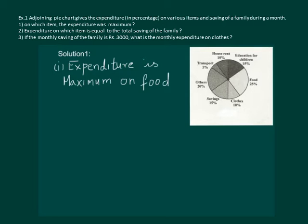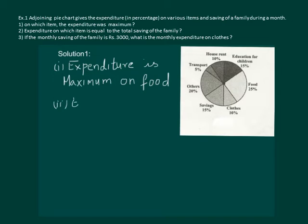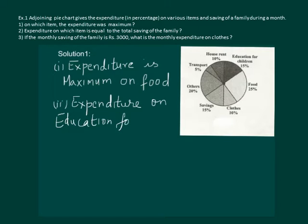The second part of the question is: expenditure on which item is equal to the total savings of the family? From the graph we can see that savings of the family is 15%, and education for children is also 15%. So we can say that expenditure on education for children is same as savings.